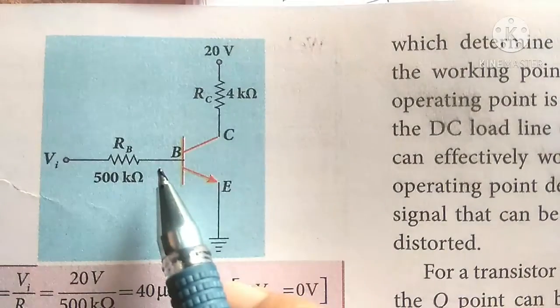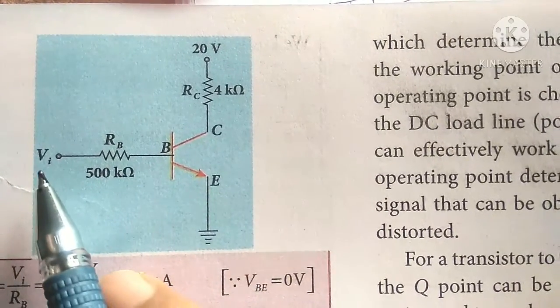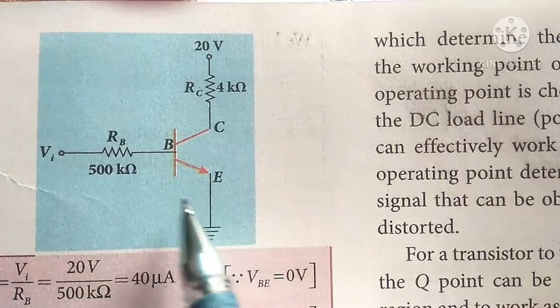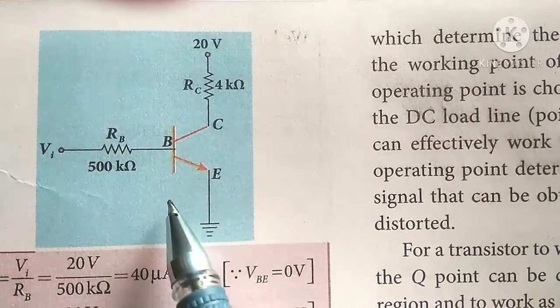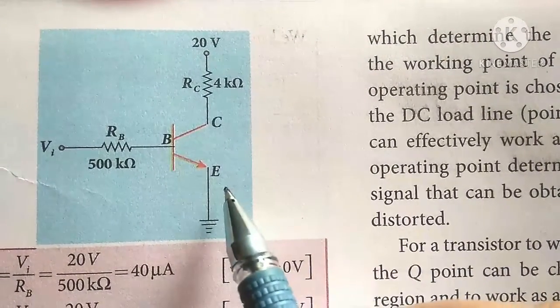So this is the diagram. This is the base input VI, VBE junction voltage 0. That is VCE junction voltage 0.